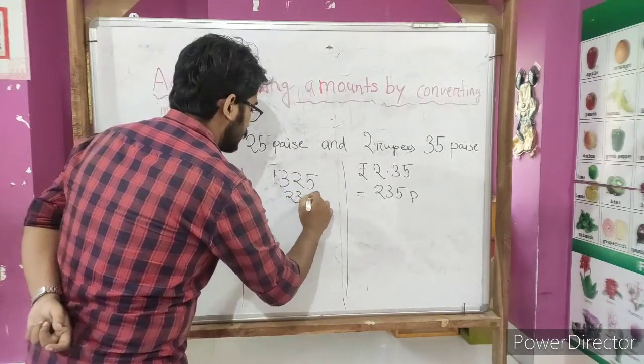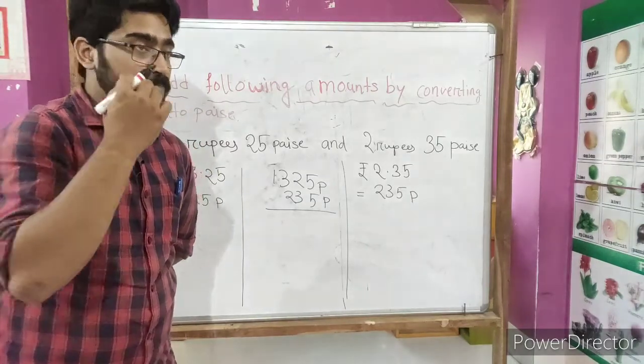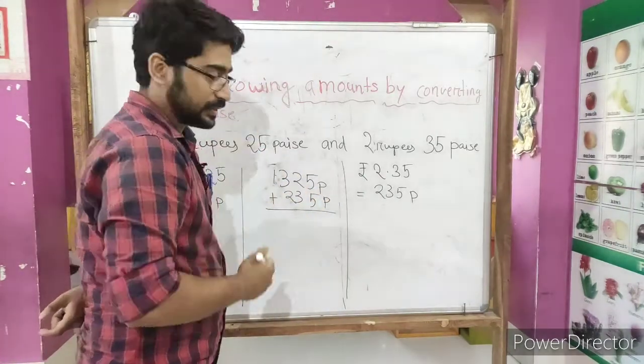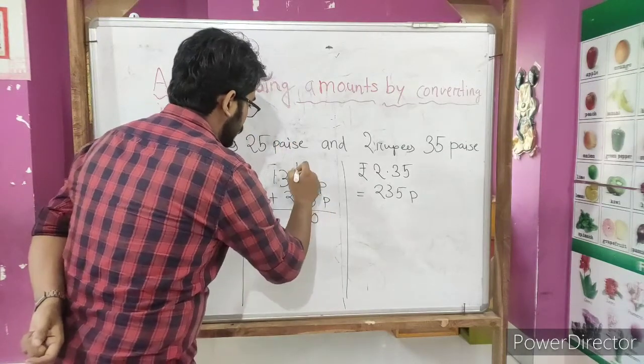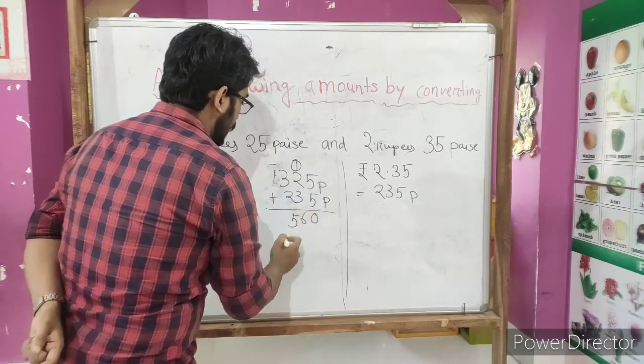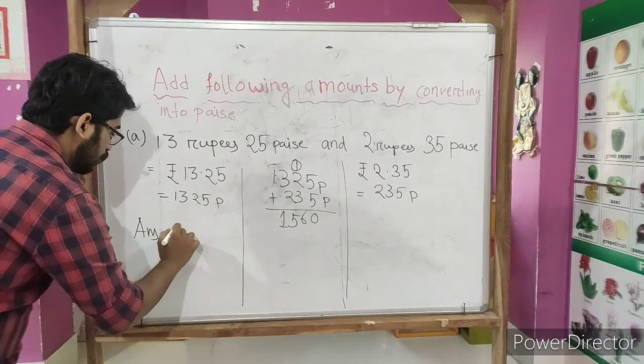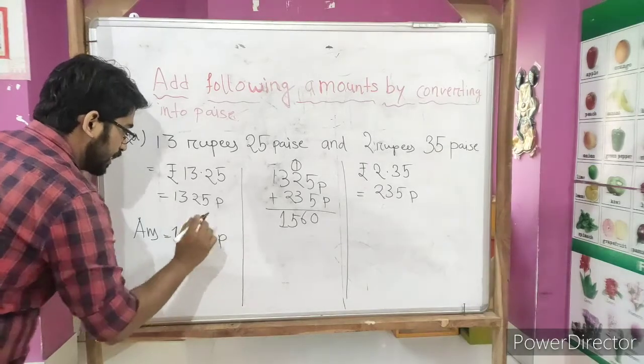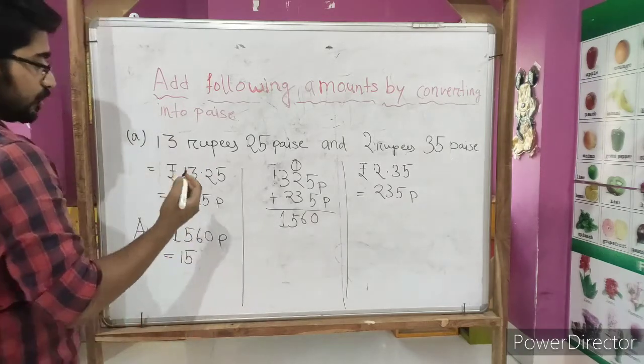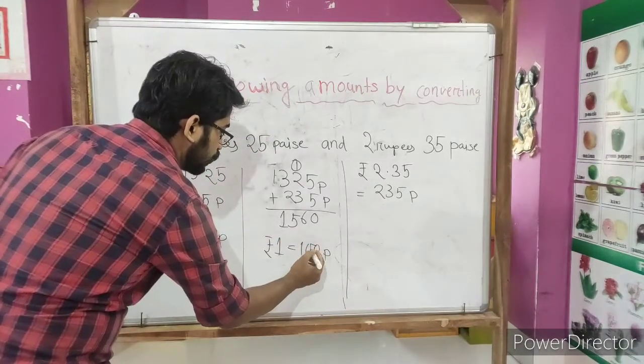P means paise. I have told you that whenever we are doing any kind of calculations in money, we need to put the unit. So unit is important - without the unit you may lose some marks. So 5 plus 5 is 10, carry 1. Two plus 1 is 3, two plus 1 is 3. Three plus 3 is 6. Three plus 2 is 5, and 1. That means 1560. So answer will be 1560 paise.